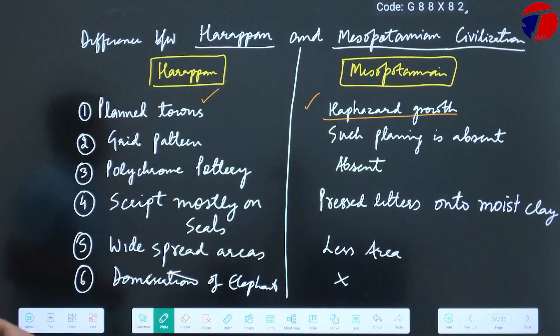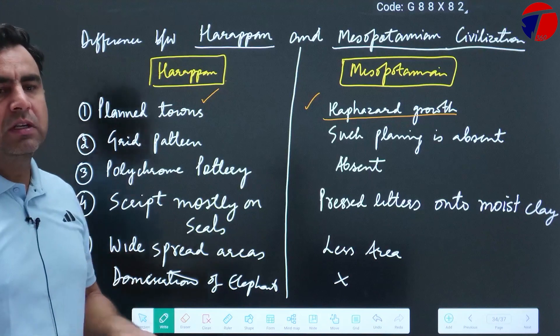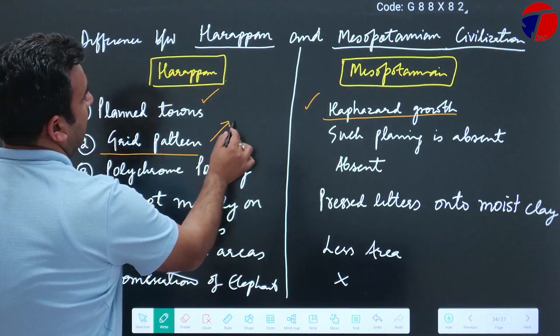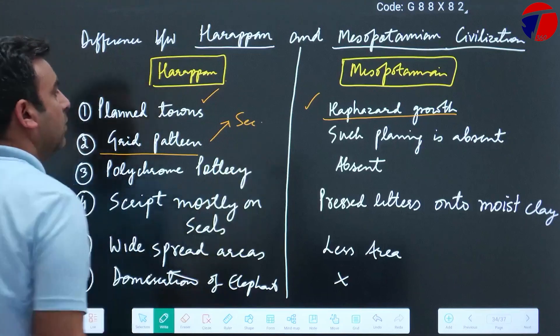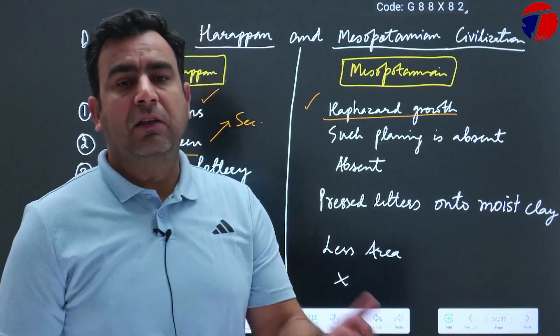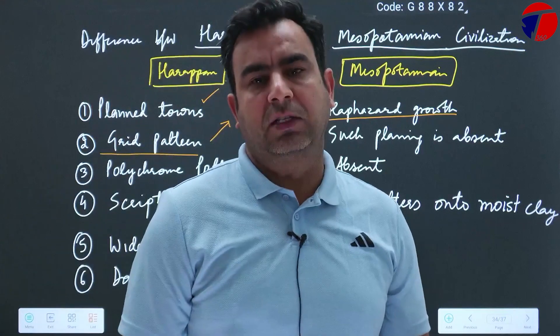In Harappan civilization, the town planning was based on grid pattern. Grid pattern means the sectorial division - the streets cut each other at right angles. But such planning was absent in case of Mesopotamian civilization.